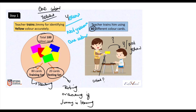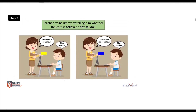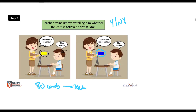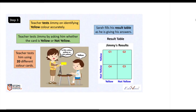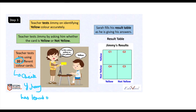First the teacher trains Jimmy by showing him a card and telling him this color is yellow, so Jimmy starts remembering. She also tells him this is not yellow because this is blue. Since we are doing just one color, it's either yellow or not yellow. She uses these 80 cards to teach Jimmy what is yellow and what is not yellow, and then she starts testing Jimmy using the other 20 cards to check if Jimmy has learned.